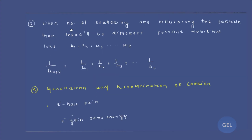Moving on to the second concept: resultant mobility. When many scattering events influence a particle, there will be different possible mobilities like μ1, μ2, μ3, and so on. To get the resultant mobility, apply the formula: 1/μ_resultant = 1/μ1 + 1/μ2 + 1/μ3. This concept is quite useful in ESE and other public sector exams, and has appeared in GATE as well.